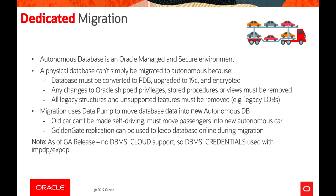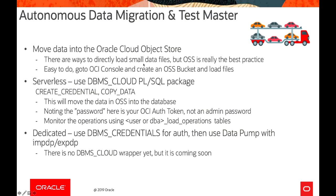GoldenGate is available as a Marketplace image in OCI, and from the OCI console you can deploy it quickly. You just set your source and destination and start moving data in real time. For smaller data files, an Object Storage bucket is a good option for serverless. You can use the DBMS_CLOUD PL/SQL package — create credential followed by copy data — to move data from object storage into the database. The password here is an OCI token, not the admin password. You can monitor the operation using the USER_ and DBA_LOAD_OPERATIONS tables. For Dedicated, use DBMS credentials for auth and then use Data Pump with impdp or expdp.